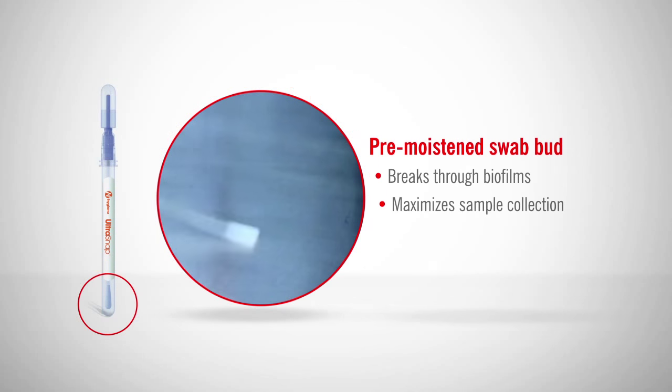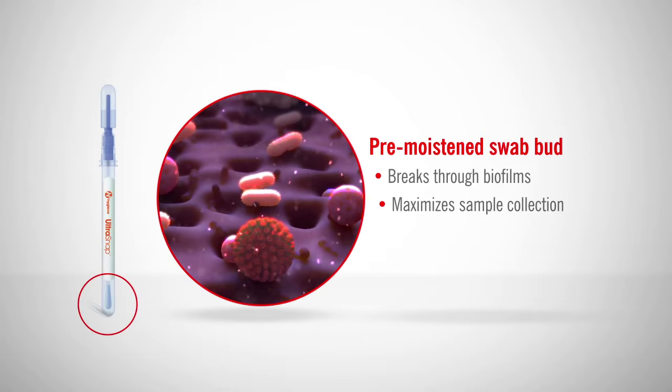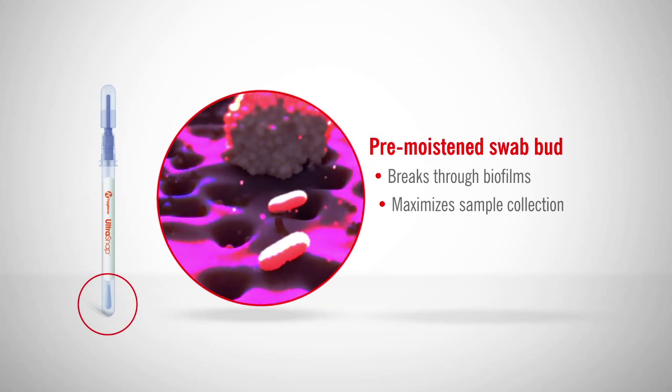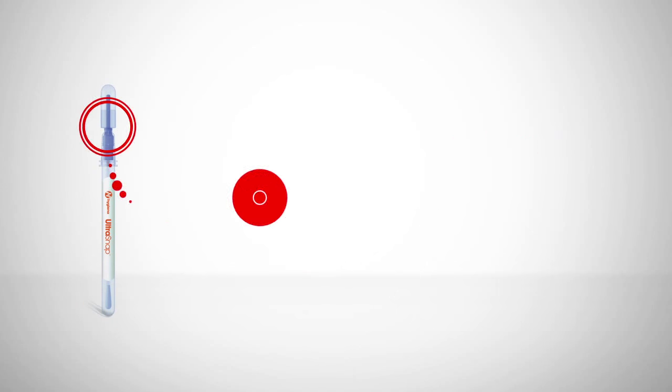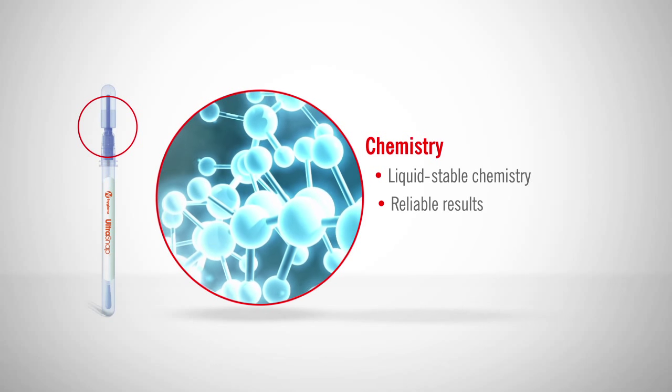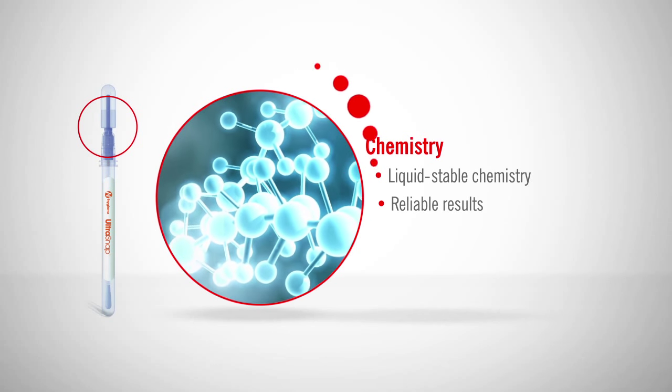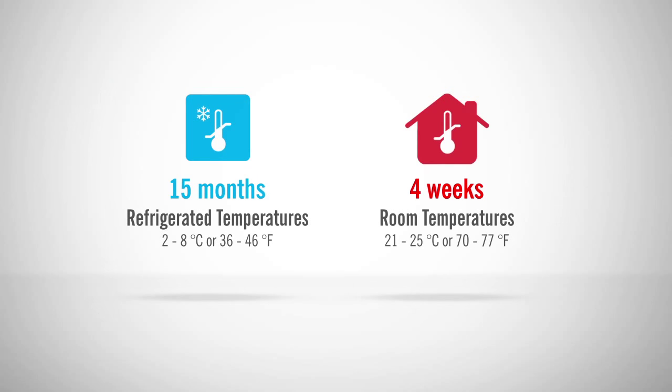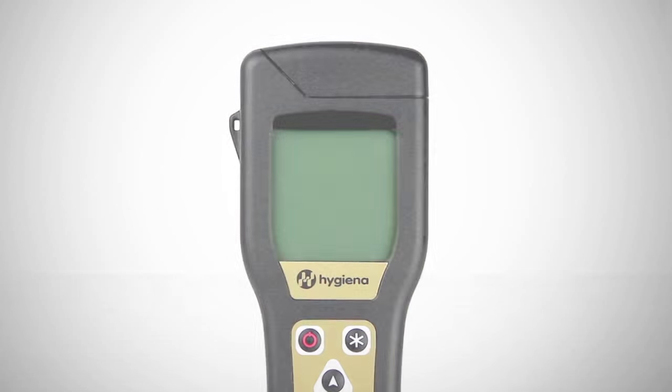UltraSnap's pre-moistened swab bud breaks through biofilms and ensures maximum sample collection for accurate results. The liquid-stable chemistry and Hygiena's patented SNAP valve facilitates superior sensitivity and reliable results. UltraSnap has a shelf life of 15 months at refrigerated temperatures and 4 weeks at room temperature. Now let's see how it works.